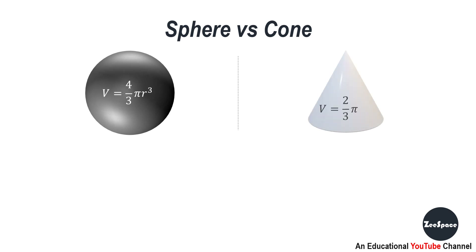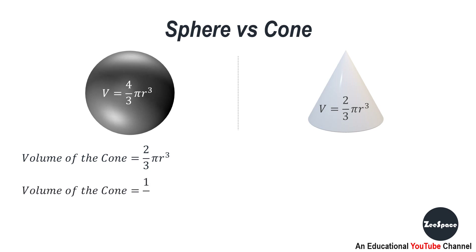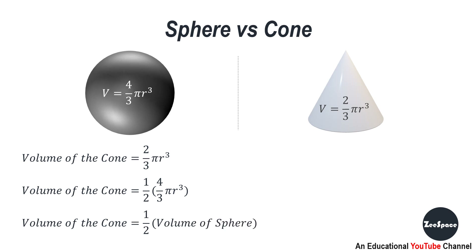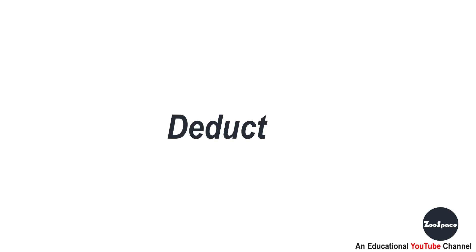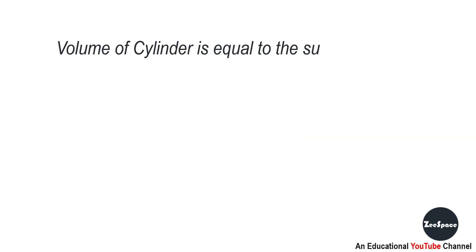Sphere versus cone: volume of sphere equals 4/3 pi r cubed and volume of cone equals 2/3 pi r cubed. We can write the volume of cone as 1/2 times 4/3 pi r cubed. So, volume of cone equals 1/2 times volume of sphere. Hence, the volume of the cone is half the volume of the sphere.